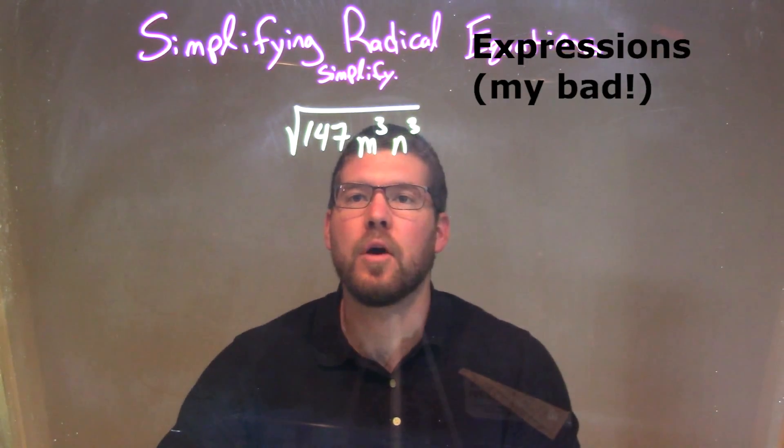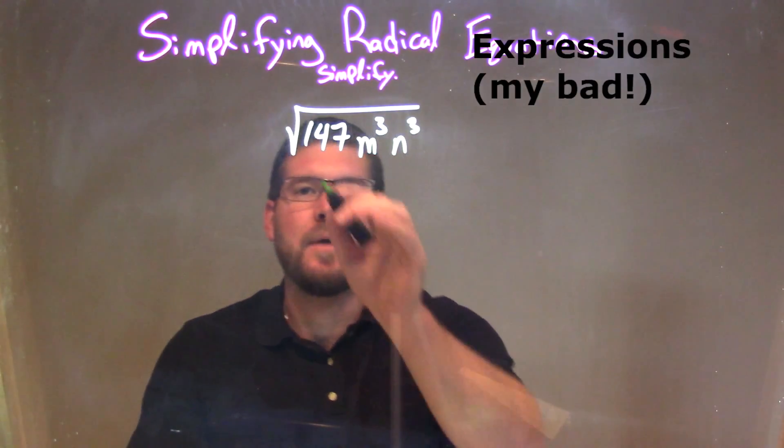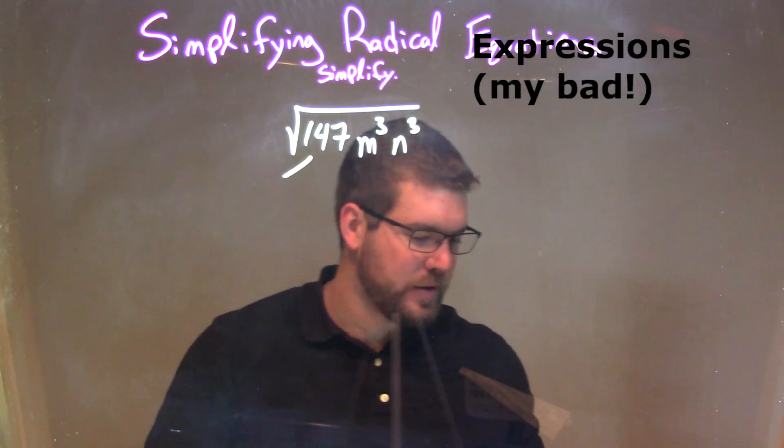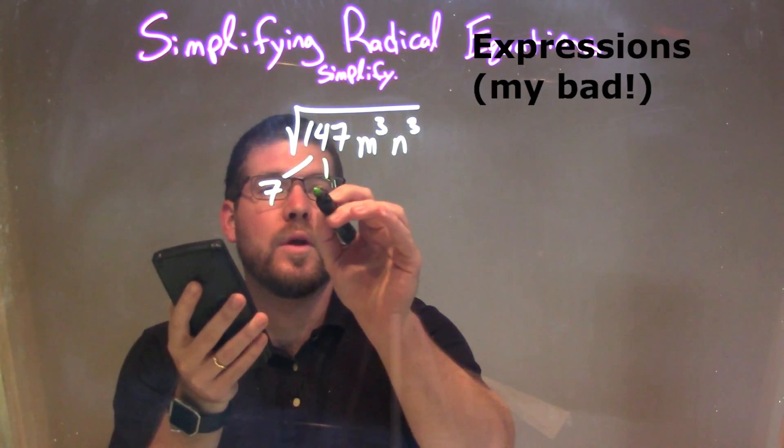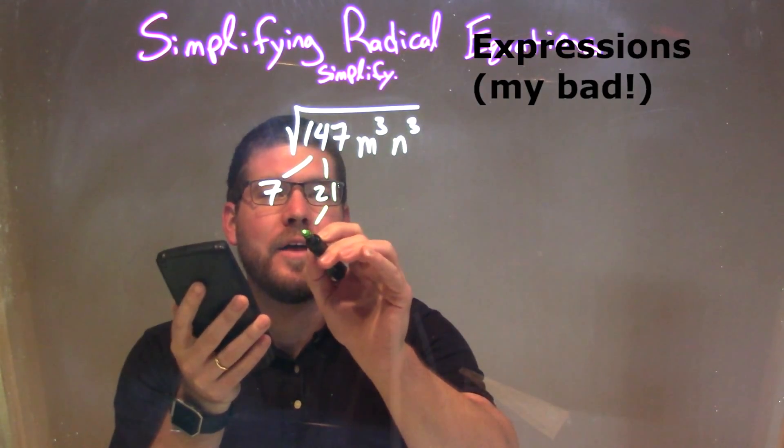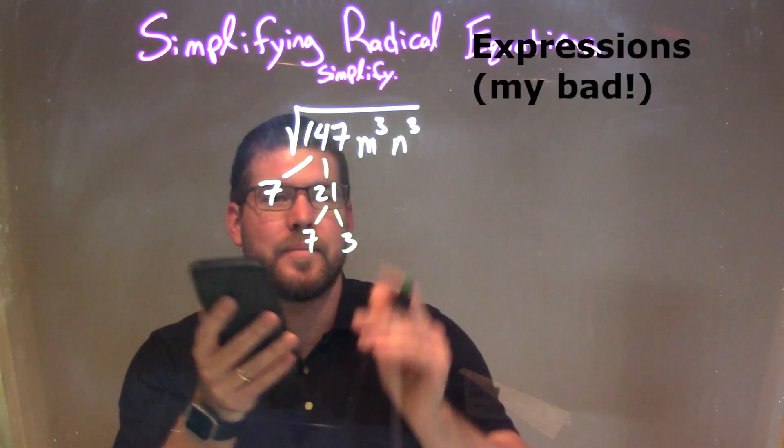So 147, we can break down. I'll use my calculator here. 147 breaks down to be 7 times 21, and 21 is just 7 times 3.